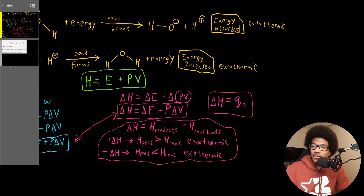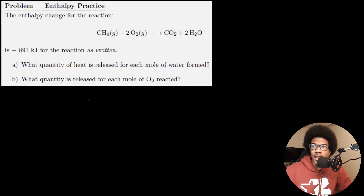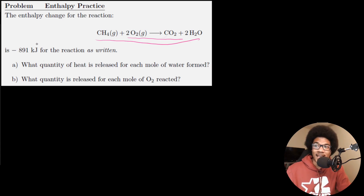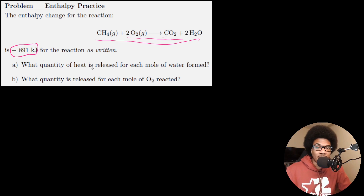Let's look at an example. We have the combustion of methane, and the enthalpy change for that reaction is negative 891 kilojoules for the reaction as written with that stoichiometry. This is the enthalpy released — we know it's released because of the negative sign. Part A asks: what quantity of heat is released for each mole of water formed?